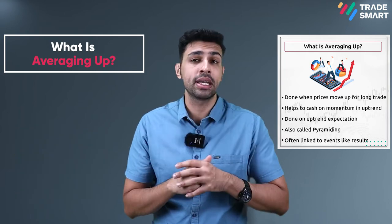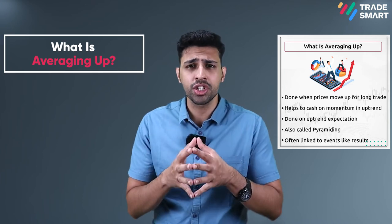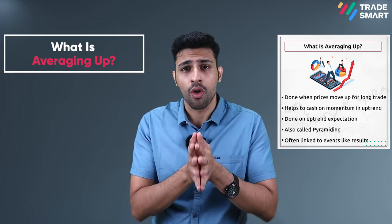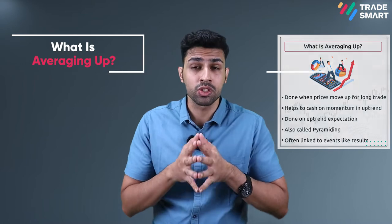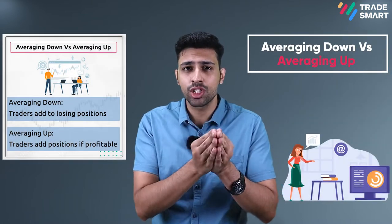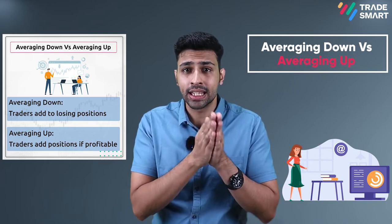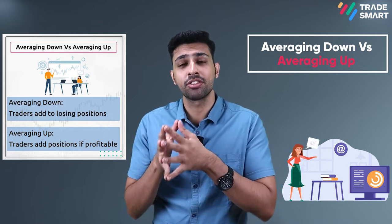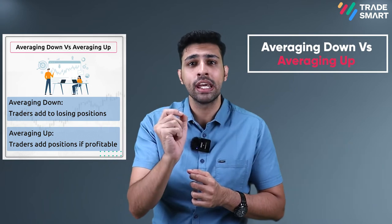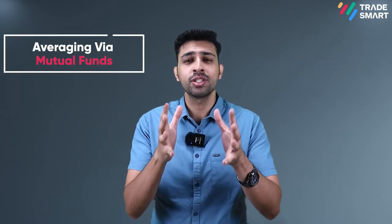We also call this pyramiding. Investors may link the situation to an event like a strong quarterly performance or an important announcement. Unlike averaging down — where the trader adds to his position when it is losing — in this money management strategy, the trader will add to his position only if it is profitable.